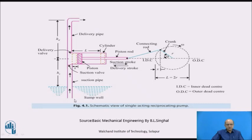Now we will consider the construction of the single-acting reciprocating pump, which has a cylinder, piston, and piston rod connected to the connecting rod and the crank. There is a shaft on which the crank is mounted, and this mechanism is powered by an electric motor, so the electric motor rotates the shaft of the crank.